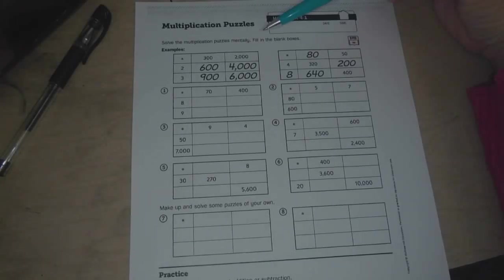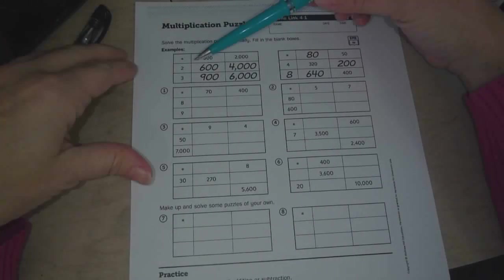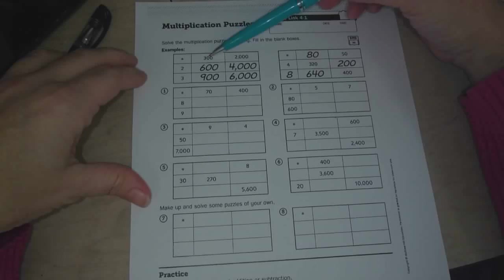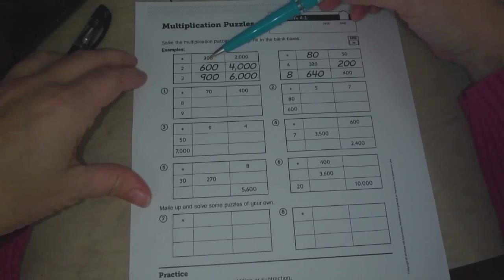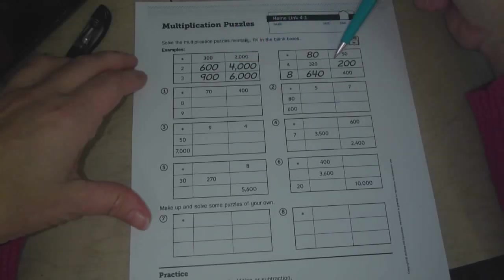So this goes along with what we did today, multiplying using our basic facts, but as multiples of 10, with the zeros.